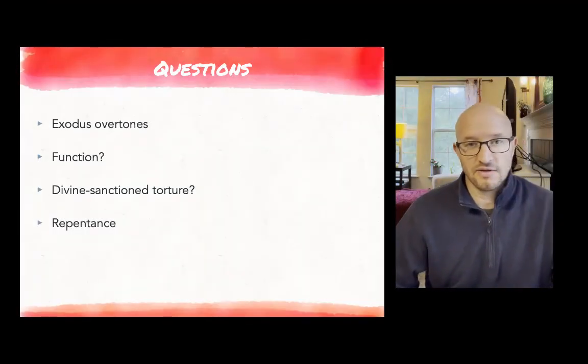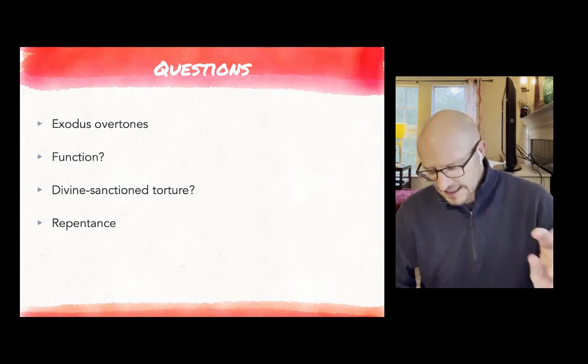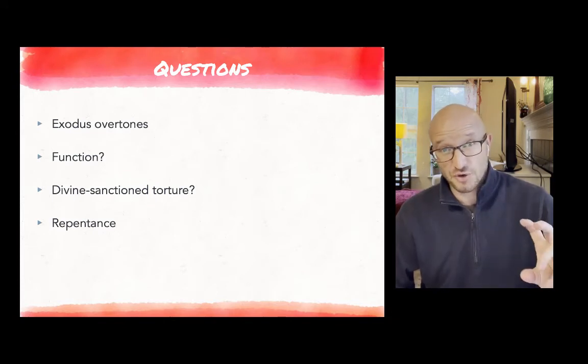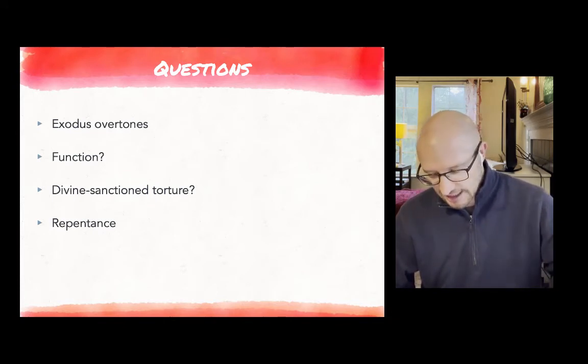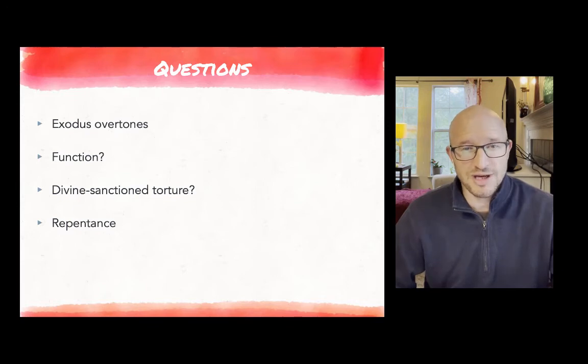So as you read this section, I want you to be on the lookout for a couple of things. A number of these will follow from what I've just said. The first is pay attention to the Exodus overtones. Where do you see the effects of the trumpet resembling the plagues? Where do you see this reversing of creation, this decreating in order to create a new creation? The second thing I would like for you to consider is what is the function of this part of Revelation? What is the function of this imagery? What does it do?